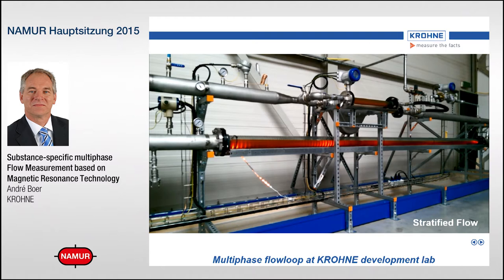In the stratified flow regime, what you typically see is on the bottom part of the pipe the liquid flowing, and on the top part of the pipe the gas flowing. There is not much interaction between the two — it is a very stable, not very dynamic way of transporting both fluids.